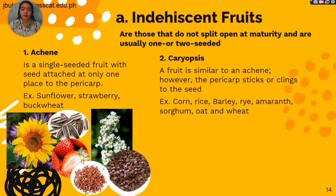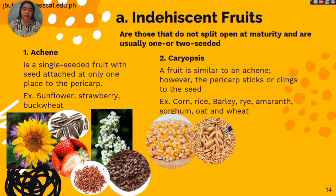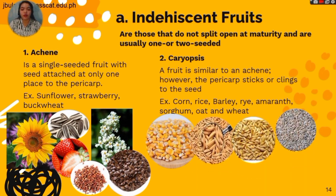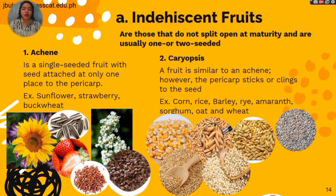The second indehiscent fruit is the caryopsis, which is similar to an achene. However, the pericarp sticks or clings to the seed. Examples are corn, rice, barley, rye, amaranth, sorghum, oat, and wheat seeds.